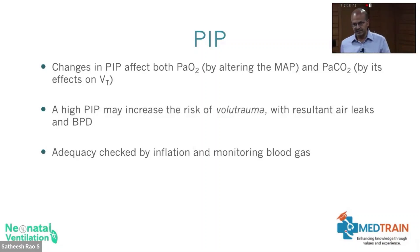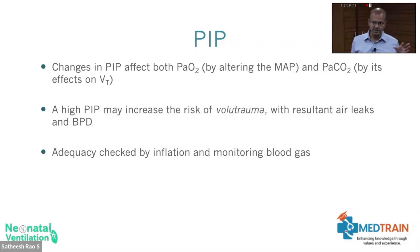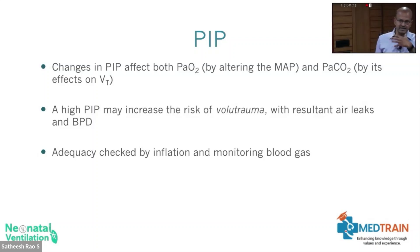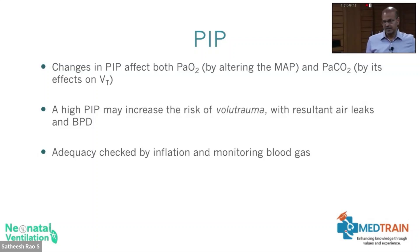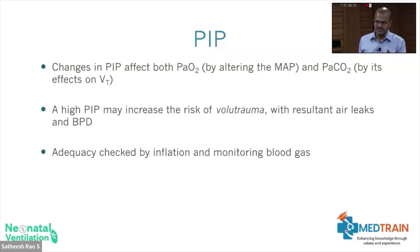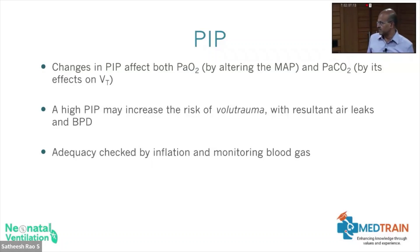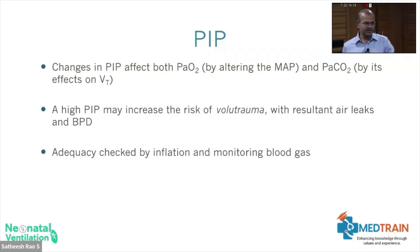A high PIP may increase risk of volutrauma — even though we regulate with pressure, it's not the pressure itself but the associated volume increase. Remember the lung is not homogeneous; different portions are affected differently. When you increase PIP, one portion may become over-distended and sustain volutrauma while another portion remains collapsed. Measures like positioning, regular suction, and chest physiotherapy can help. The adequacy of PIP is checked by auscultation and blood gas monitoring. We now have volume guarantee, where delivered volume is measured and PIP is regulated accordingly — Dr. Dharani will discuss that this afternoon.